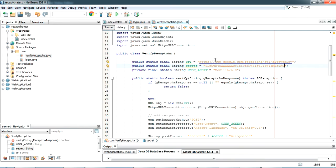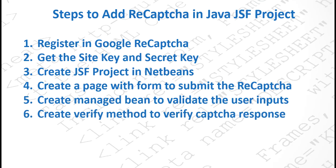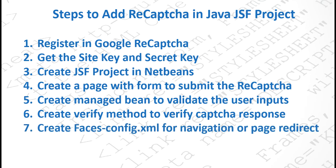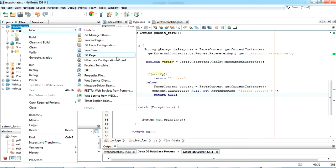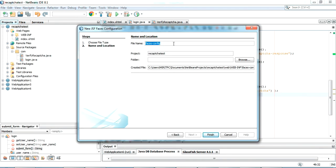We've completed the verify method to verify the captcha response. The next step is to create the faces-config.xml, which redirects your page after verifying the captcha. If verification is not successful it redirects to login.xhtml, and if successful it forwards to a success page. Right-click your project, go to New, and select JSF Faces Configuration. The default name is faces-config — just click Finish.